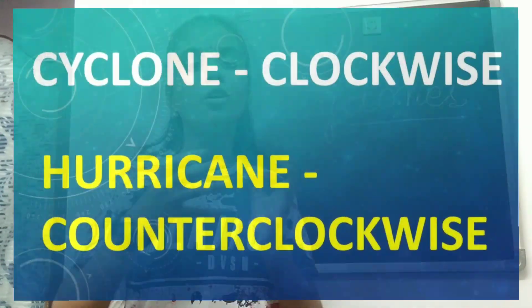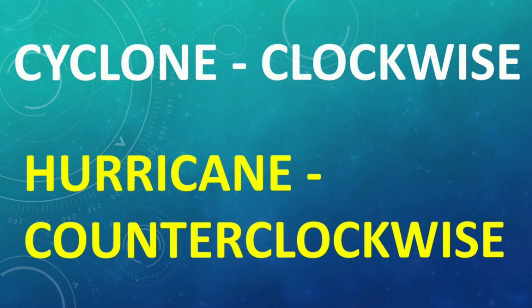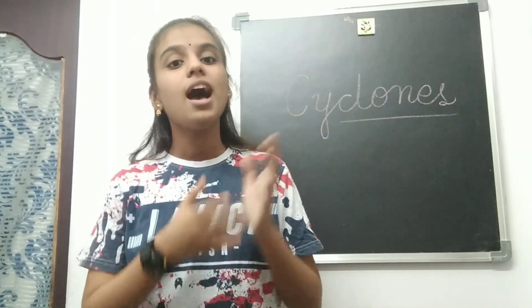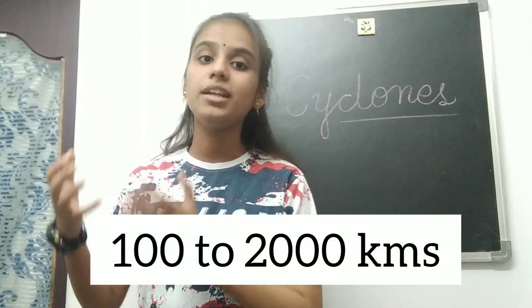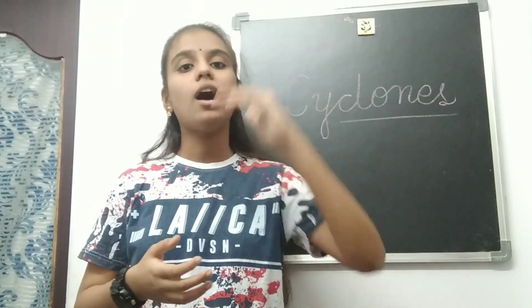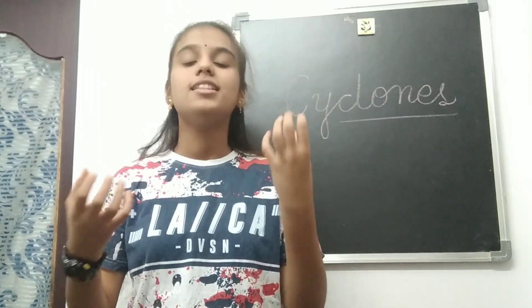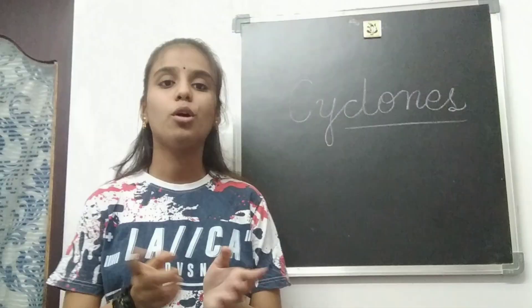Cyclones rotate clockwise and hurricanes rotate counterclockwise. Tropical cyclones range from 100 to 2000 kilometers in diameter and can grow up to a height of 10 kilometers. They usually weaken when they hit land because they are no longer fed by the energy coming from warm ocean bodies. One major example of a cyclone in India is Cyclone Amphan, which damaged West Bengal and its bordering states.